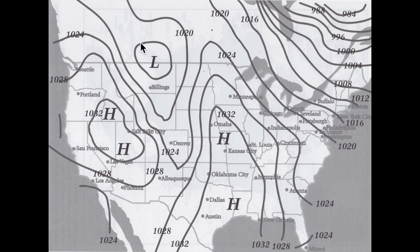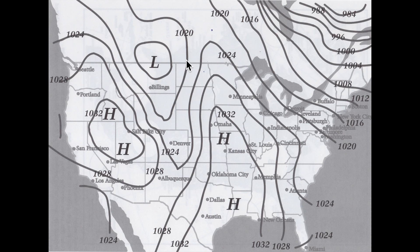Now there's a line that circles around with no number on it — so how do we find its value? There's an organization to these isobars: just to the right of it you can see 1024, go over another line and you see 1020, then 1016. There seems to be a jump of four millibars from one line to the next. The only way this unlabeled line can work is if the 1020 line loops around off the edge of the map and connects back.